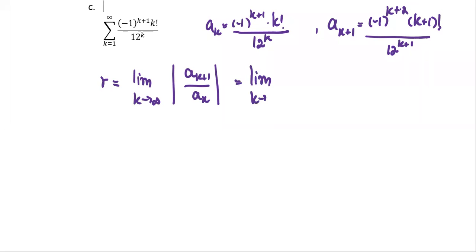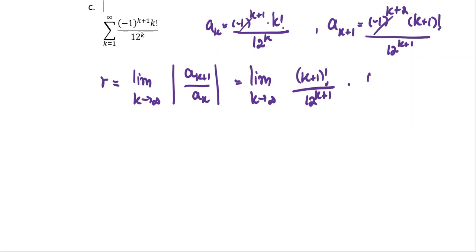Taking the limit as k approaches infinity, the absolute value will take care of the negative coefficient. So the a_{k+1} term is k plus 1 factorial divided by 12 to the power k plus 1, multiplied by the reciprocal of a_k — ignoring the negative coefficient since the absolute value handles it. The reciprocal of a_k is 12 to the power k over k factorial.